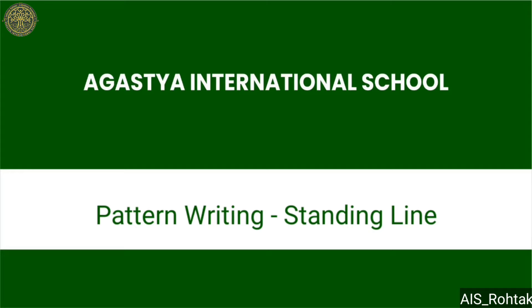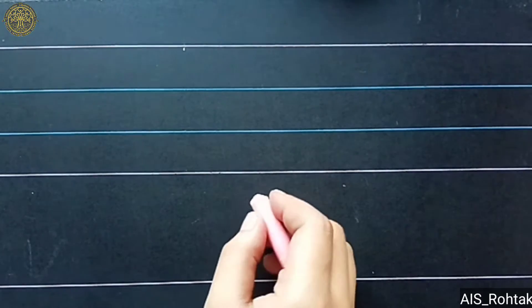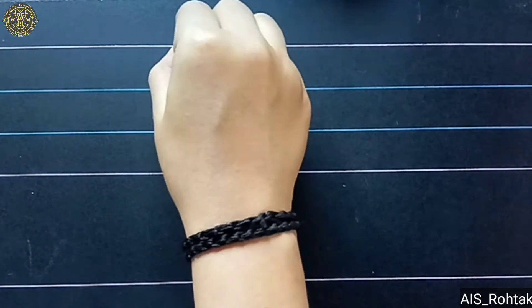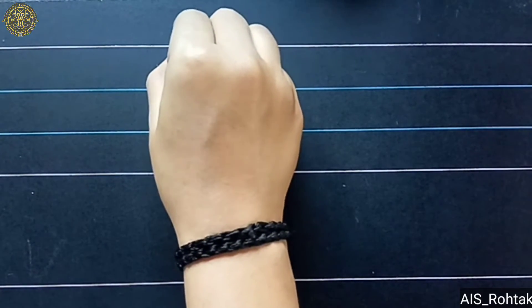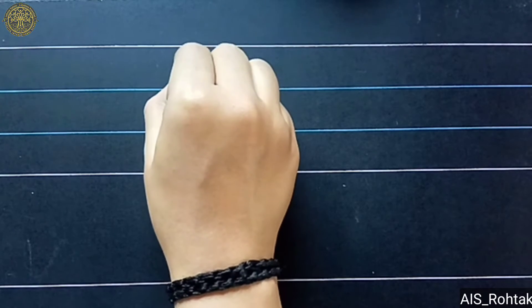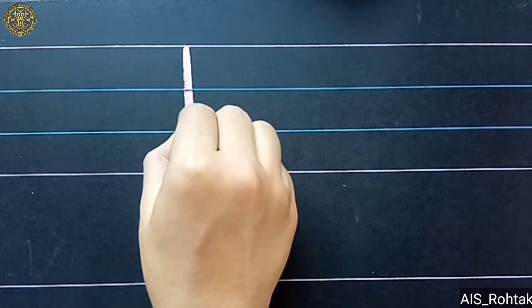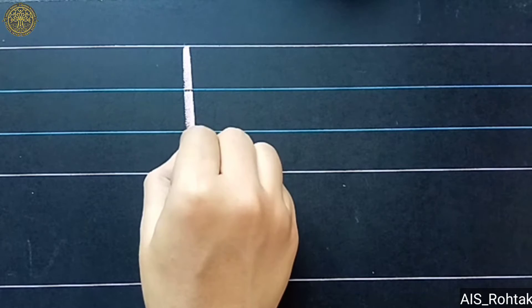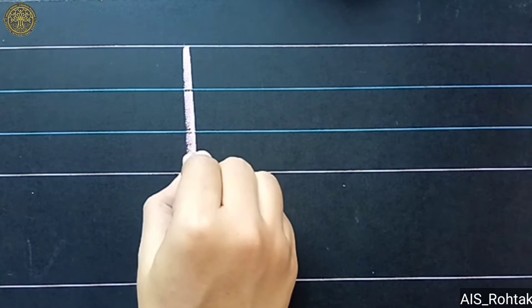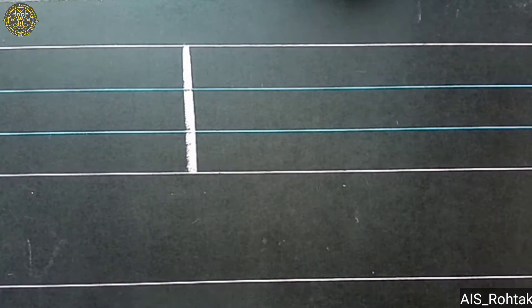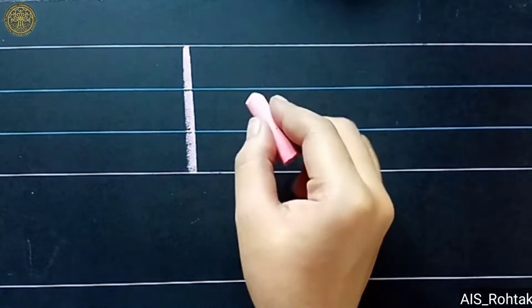Today in this video I am going to tell you how to draw a standing line. So let's start. For standing line, start from the red line. Go down, down, down, down, down and touch the last red line like this. This is standing line.